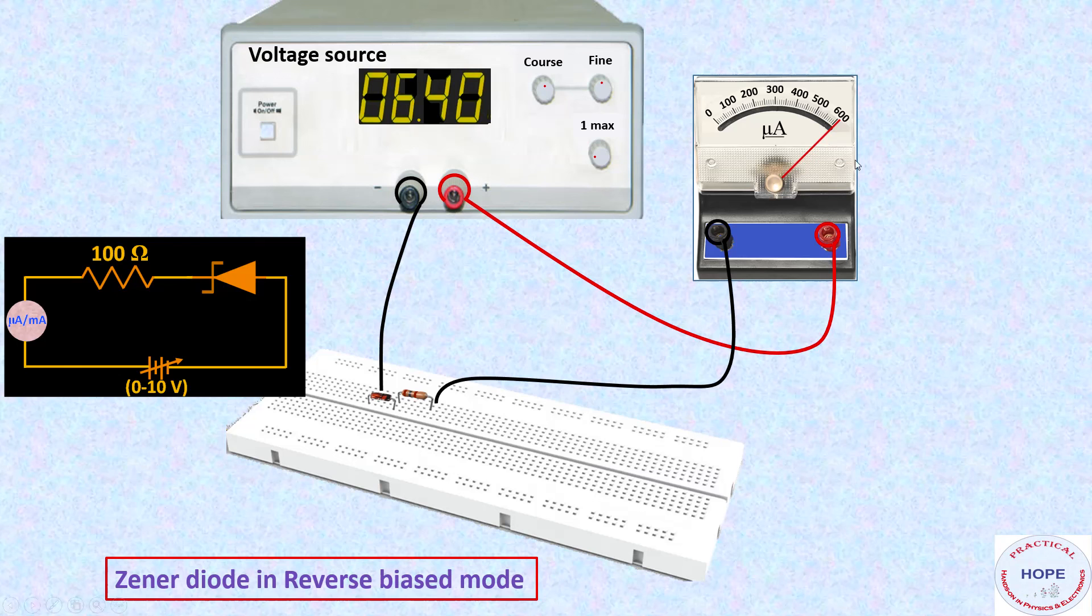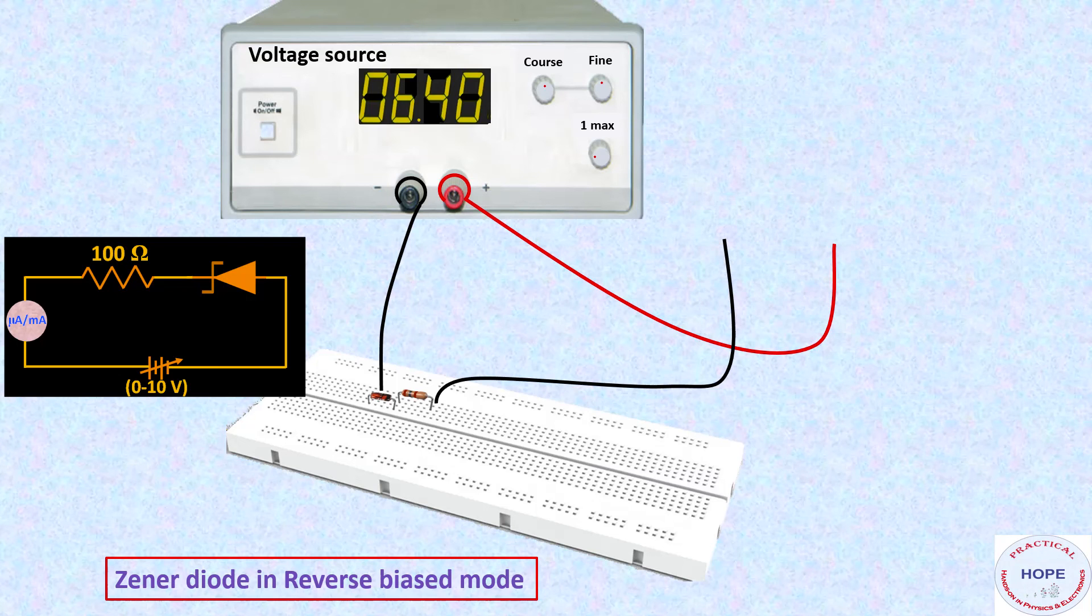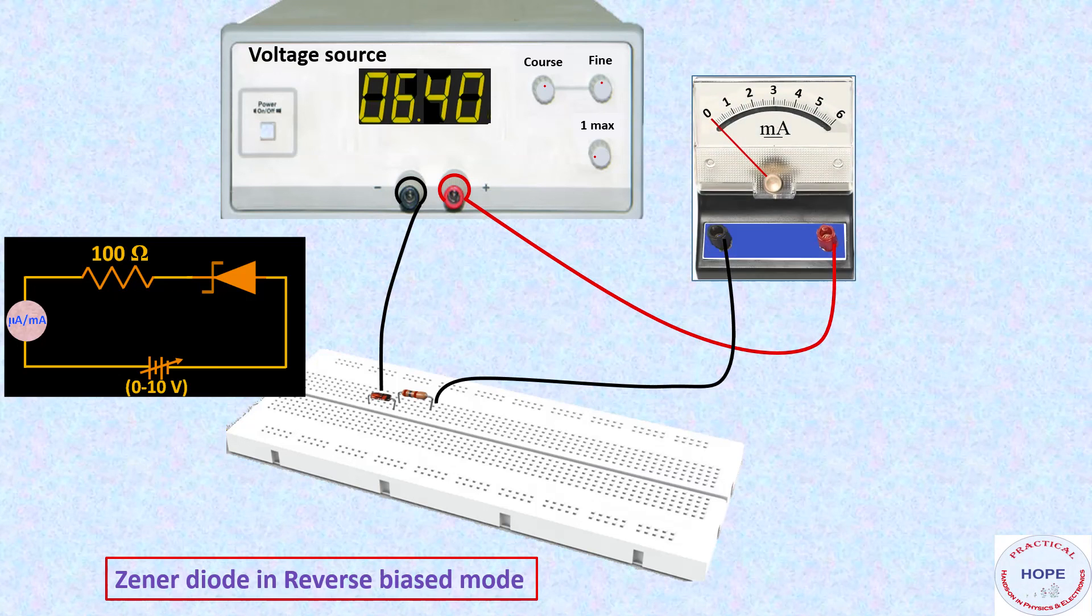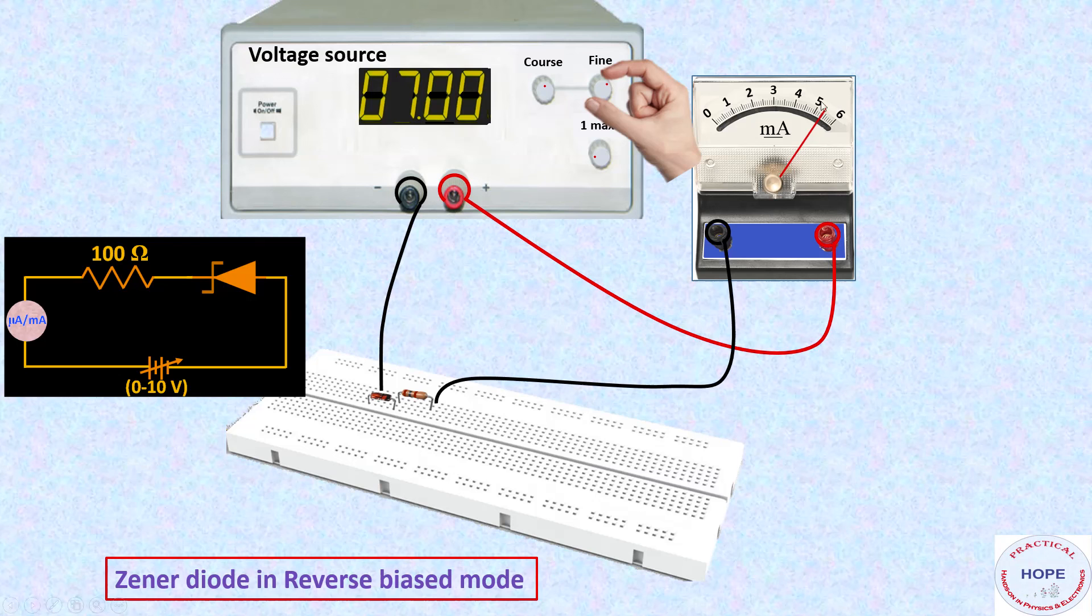The current has overshot and it is beyond the range of the micrometer. So we'll replace micrometer with milliammeter now and further increase the voltage: 6.5, 6.6, 6.7, 6.8 till 7 volts. Now the current is about 5.4 milliamperes.